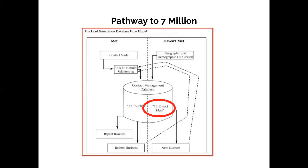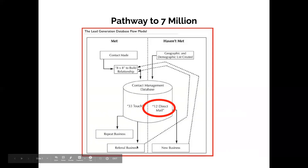Going back to our chart, if you have your contact on the MET side of the database and you've run them through the 8x8 in our workshop — the first 150 people go through the 8x8, they dump into the 33 Touch — we do this workshop, say, 10 times, and we have 1,000 people in our 33 Touch, all running, cooking along. They are going to give you repeat business and they are going to give you referral business.